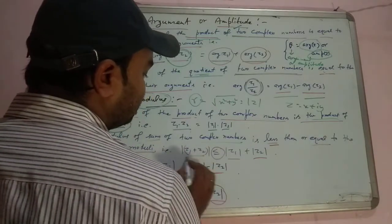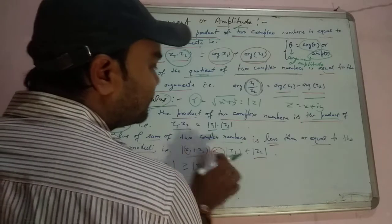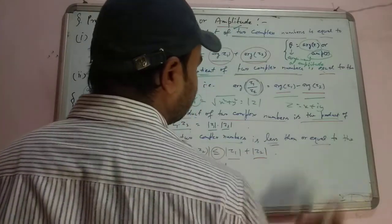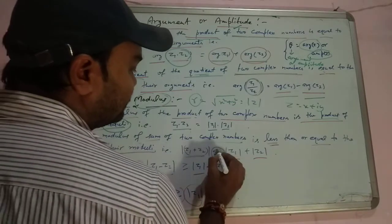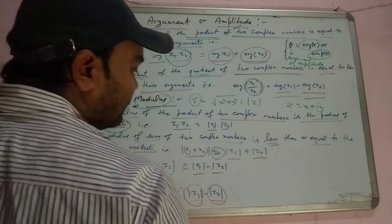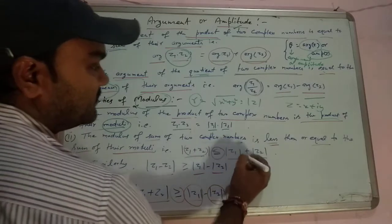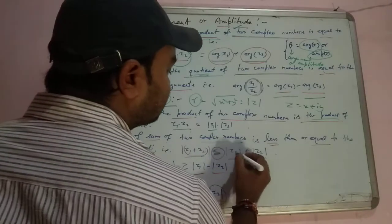And the modulus of sum of two complex numbers is less than or equal to the sum of their moduli. This is the sum of different complex numbers' mods.